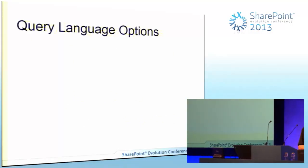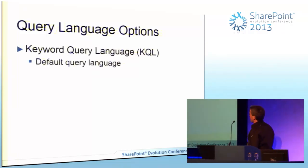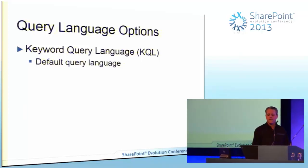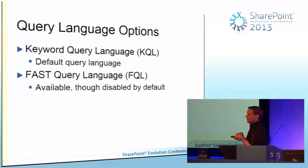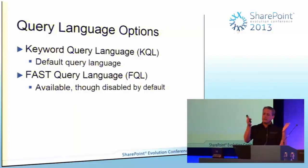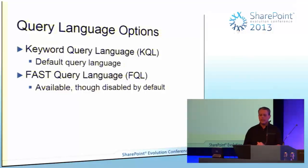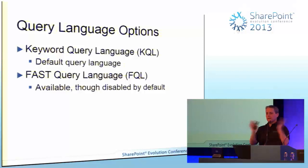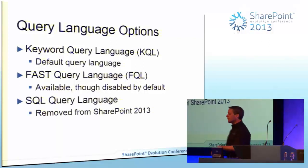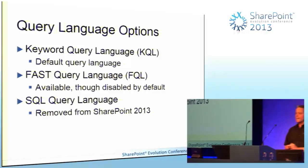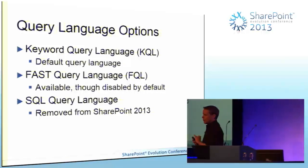If you're constructing queries in SharePoint search, you have query language options. The preferred approach is KQL, the Keyword Query Language — it is the default in SharePoint 2013. You can also still use FQL, the Fast Query Language from Fast for SharePoint; it's disabled by default but you flip a switch with a little PowerShell. If you've written applications using FQL for SharePoint 2010, they'll still work in 2013. Sadly, if you've written queries using the SQL query language, that has been removed from the product — KQL is your best bet.